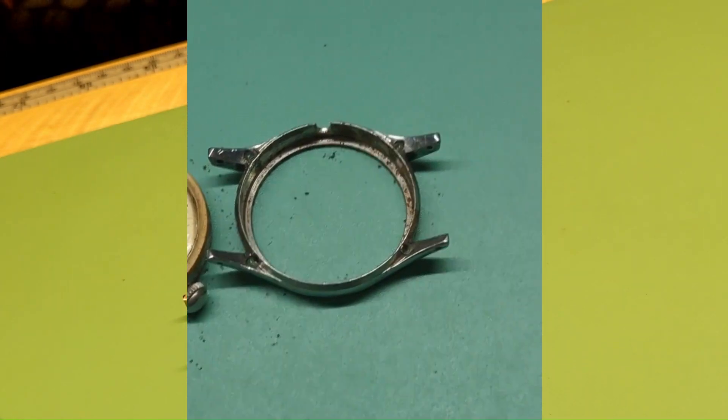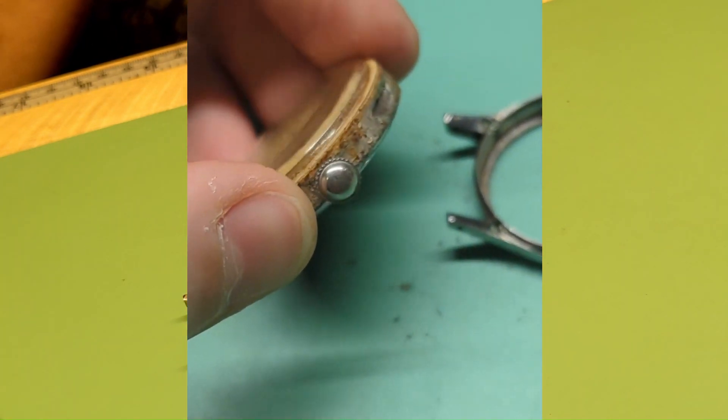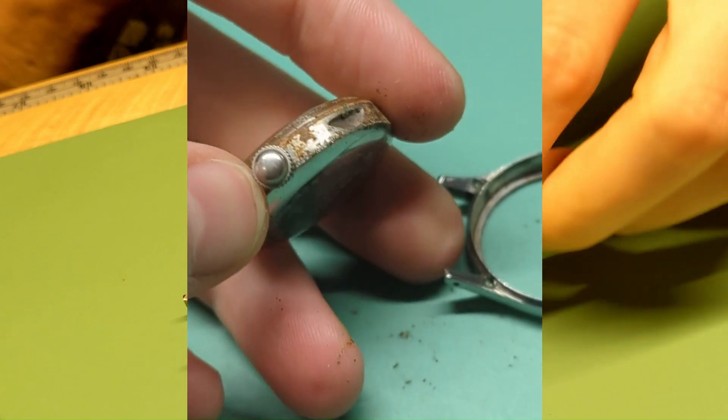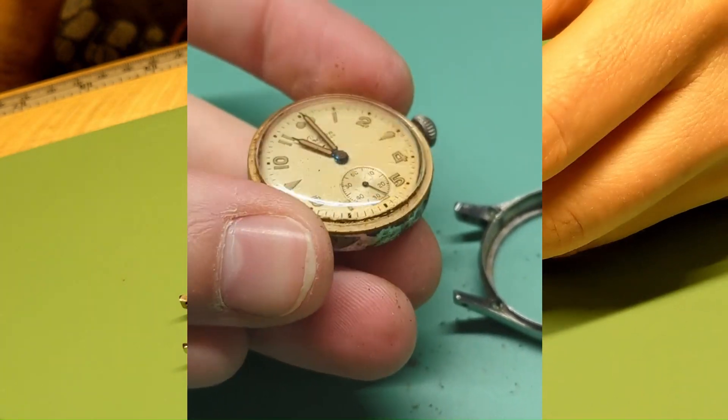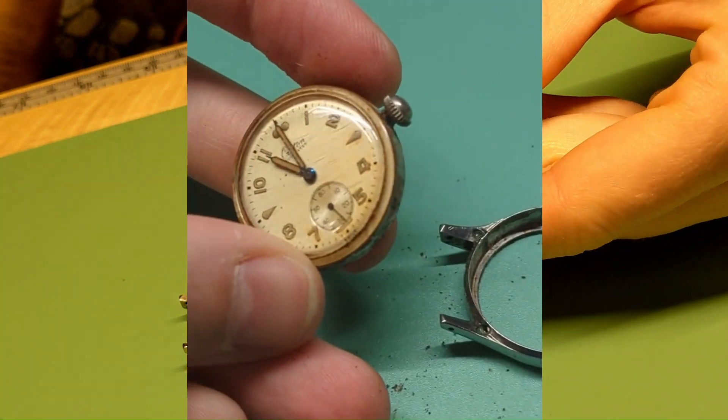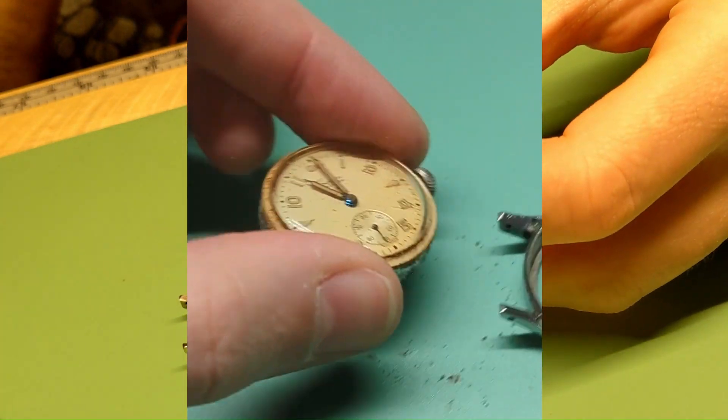As I'm pushing it out, you can see how much gunk there is and how stuck it is in there. Pretty gunky in there. Very gunky. Luckily it looks like it was a pretty good seal, so hopefully the movement's okay in there.